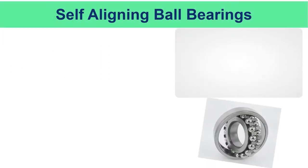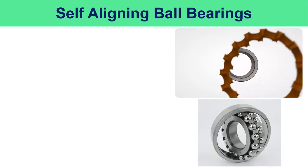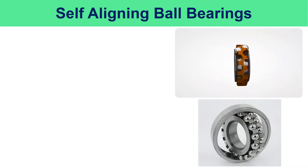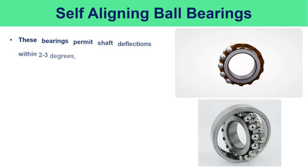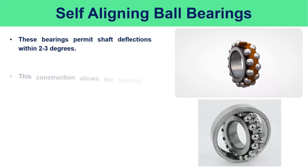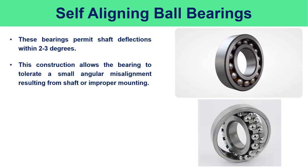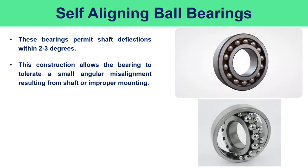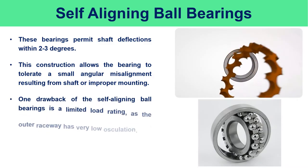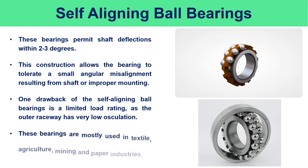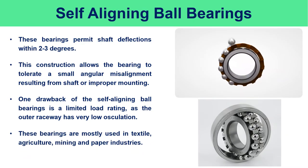Self-aligning ball bearings consist of two rows of balls secured and separated by a cage on an inner race and a sphered outer race. These bearings permit shaft deflections within two to three degrees, allowing the bearing to tolerate small angular misalignment resulting from shaft deflection or improper mounting. One drawback is a limited load rating, as the outer raceway has very low osculation. These bearings are mostly used in textile, agriculture, mining, and paper industries.